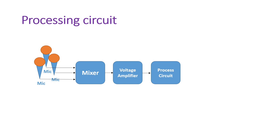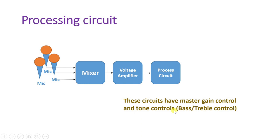After the voltage amplifier we connect processing circuits. The processing circuit has two key controls: master gain control, which provides the resultant gain of the entire audio signal, and tone controls, which provide bass and treble control. So the processing circuit provides this control mechanism — master gain and tone controls.